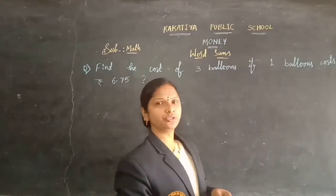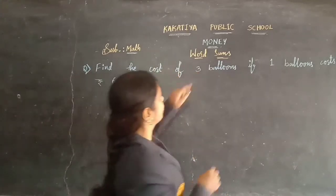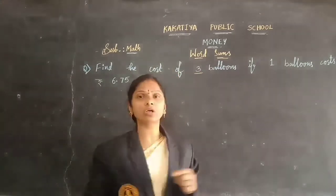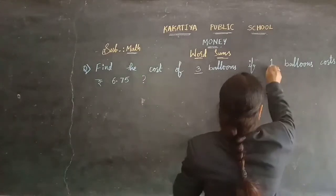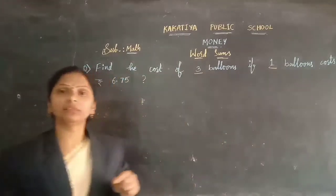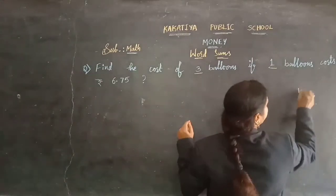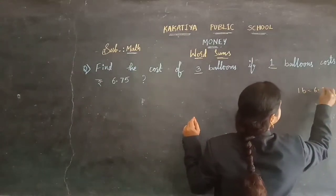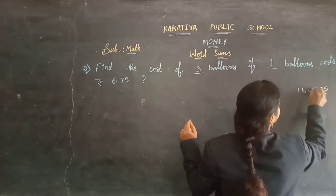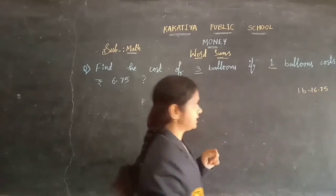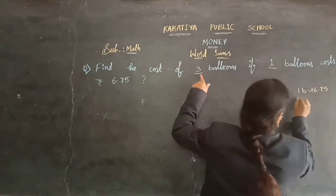Yes children, let's do this problem here. Find the cost of 3 balloons — we need to find out the cost of 3 balloons. If 1 balloon cost is given as 6 rupees 75 paise, we need to find the 3 balloons cost.